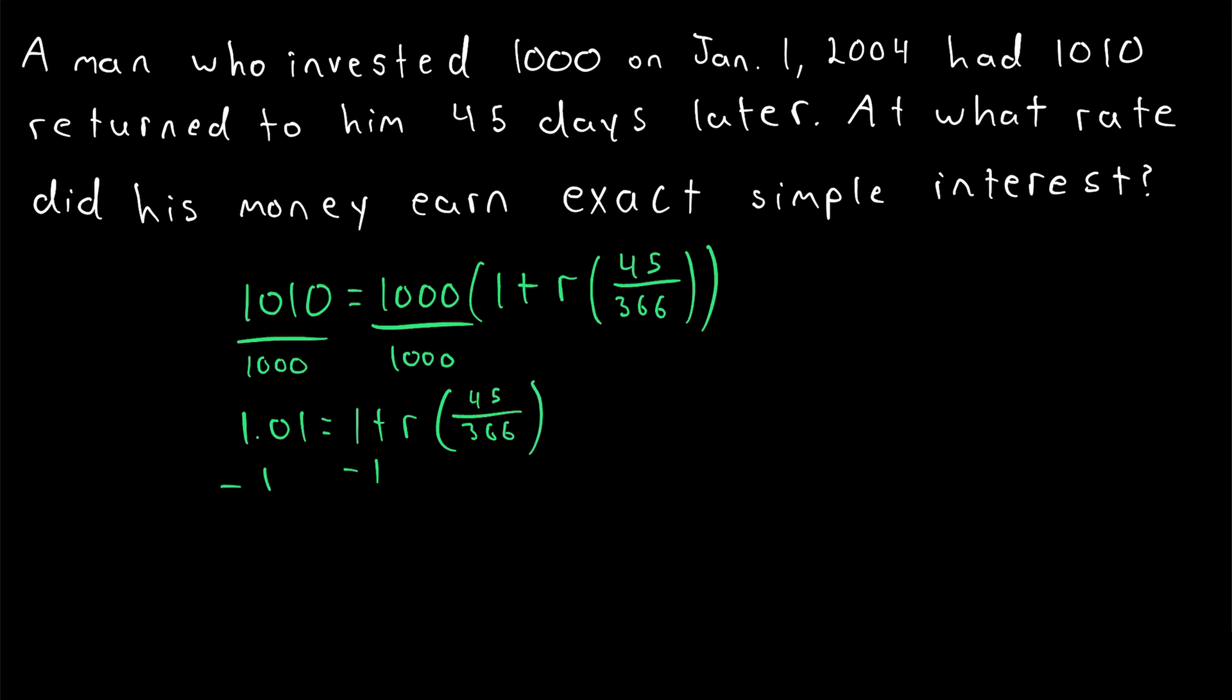Then, subtract 1 from both sides of the equation, so we have 0.01 is equal to the interest rate R, multiplied by 45, divided by 366. Then, finally, to get rid of this factor,